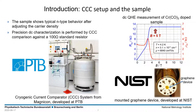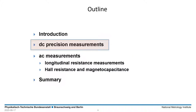On the lower left side, you see the mounted graphene device from NIST that is in all cases adjusted to an N-type carrier density in the lower range of 10 to 11 per square centimeter using the described doping technique. For DC precision characterization, we used our CCC resistance bridge from Magnicon to compare the QHR device to a 100 ohm standard resistor. This brings me to the results of the DC precision measurements.